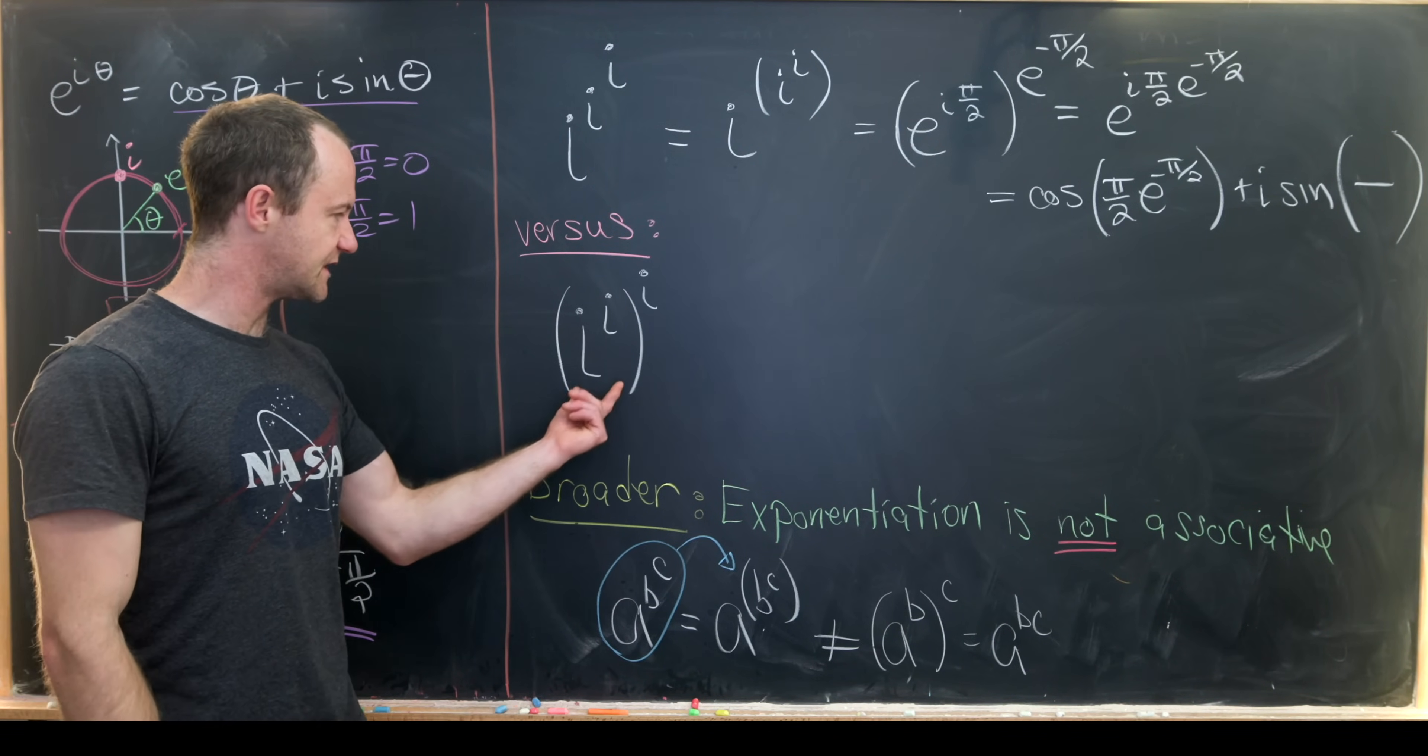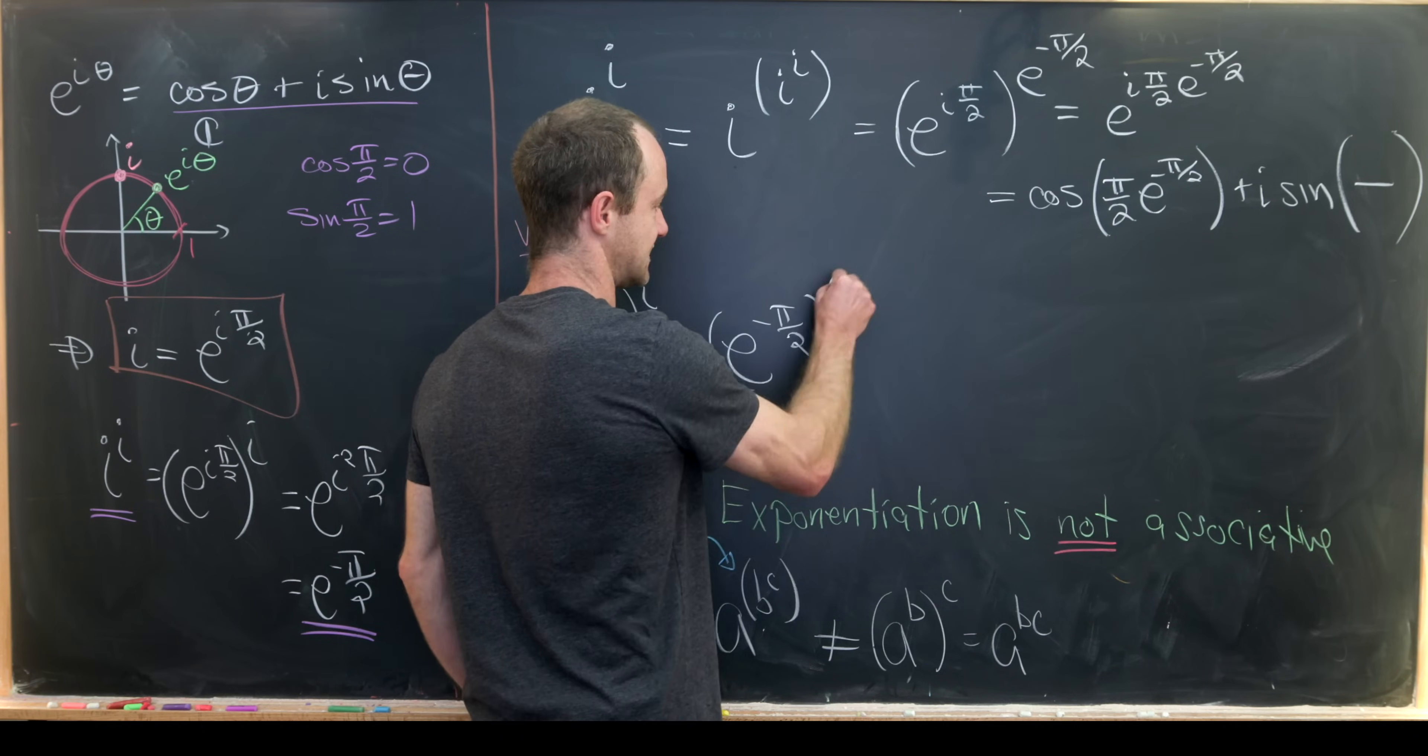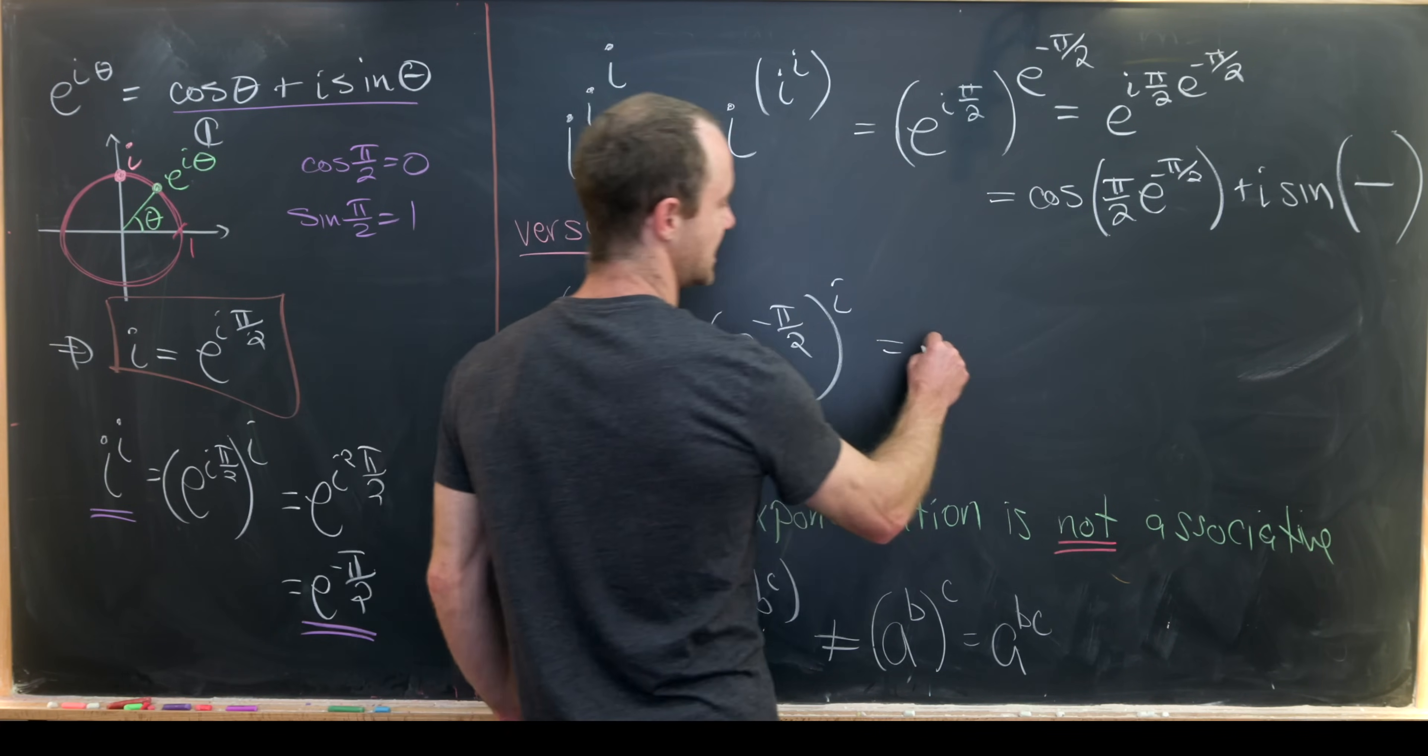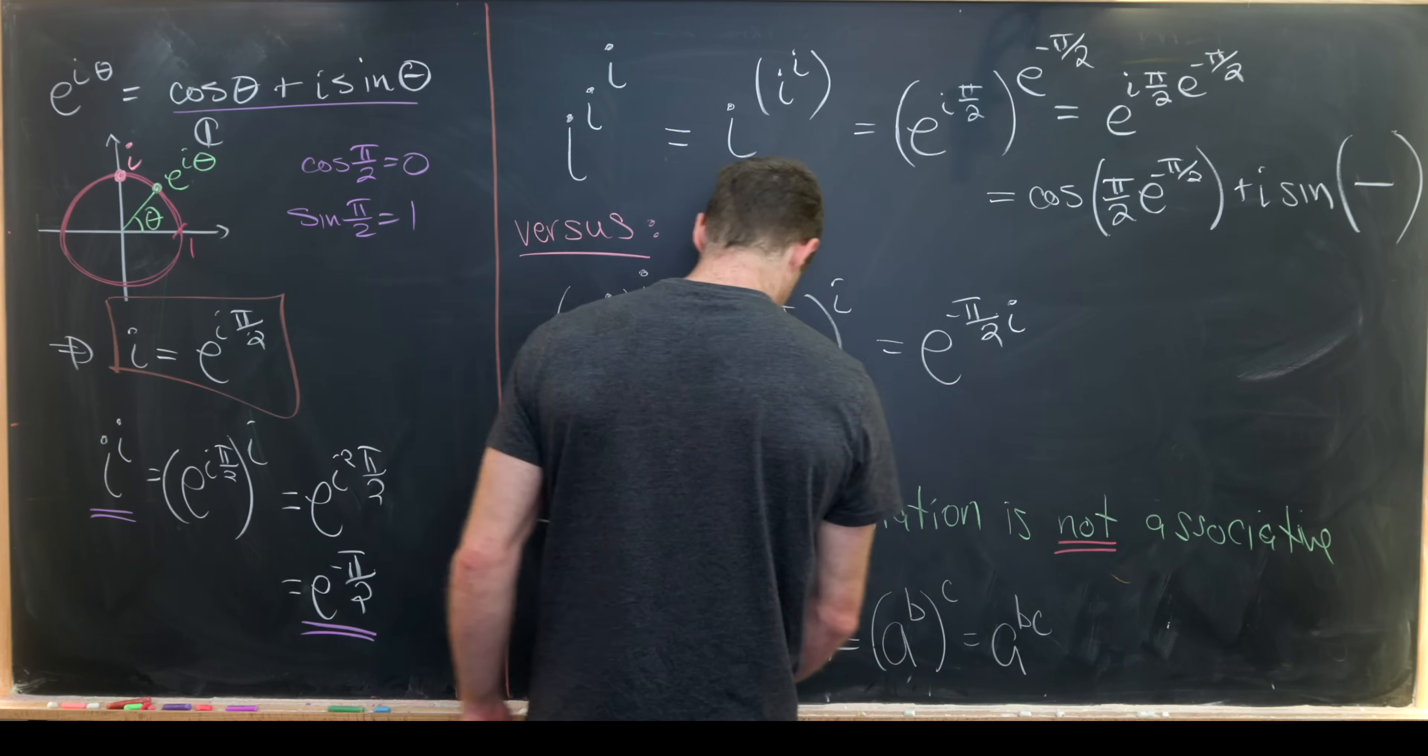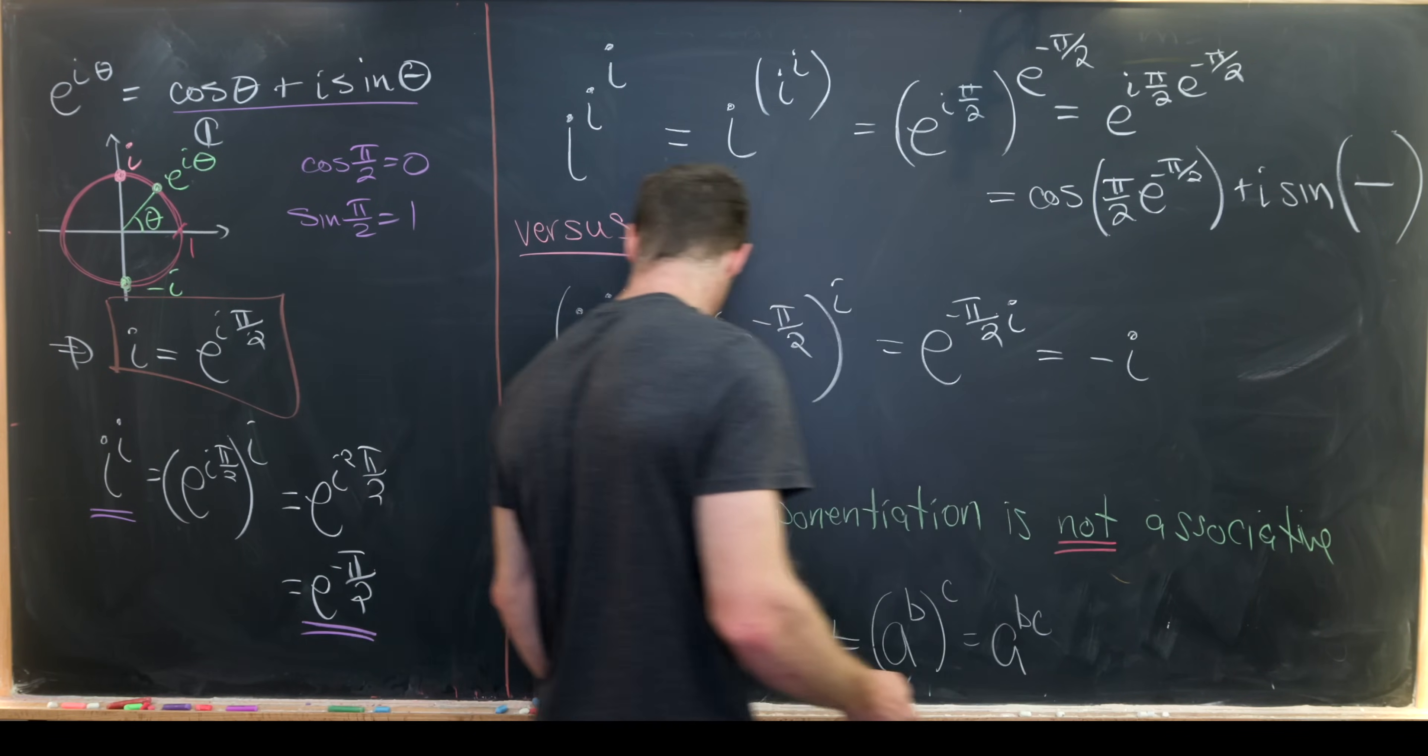If it's associated this way, we can take this i to the i and rewrite it as e to the minus pi over two, and then we're raising that to the i-th power. But notice that's just exactly equal to e to the minus pi over two times i. But if we look over here, that goes down here to the number minus i, given the argument here is minus pi over two. So anyway, here we get minus i.